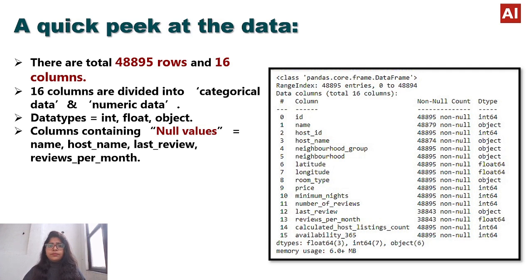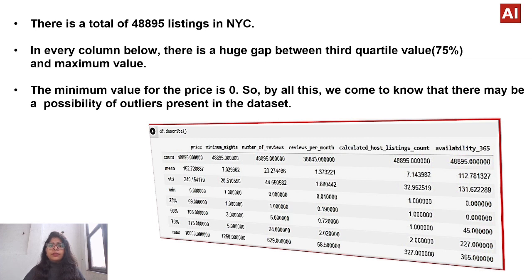Looking at the statistical information, we can see that in every column there is a huge gap between the third quartile range and the maximum value, and the minimum value for price is zero. This suggests there may be a possibility of outliers in the dataset. We will work on removing those outliers. For null values, if we don't need them, we drop them; otherwise we replace the null values by zero. We use the quantile method to remove outliers.